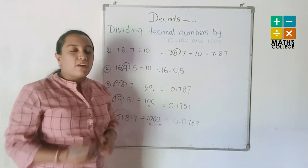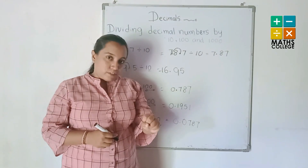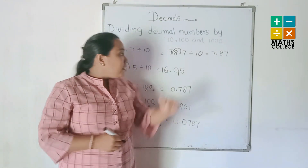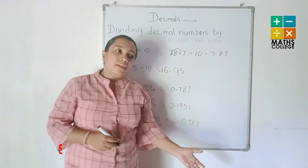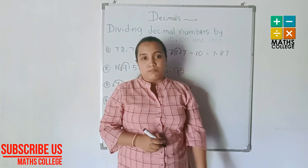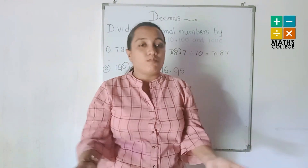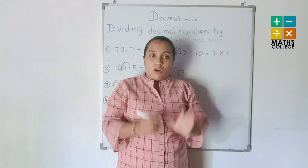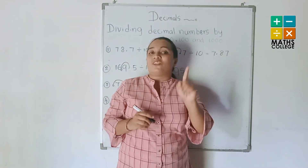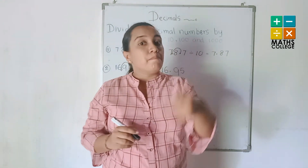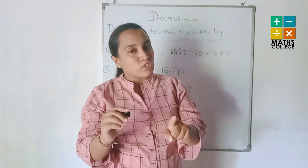Now observe these five examples. These things are very easy for you — observe carefully, step by step. We covered multiplication and division of decimal numbers: how to divide by a whole number, and by ten, one hundred, and one thousand. Goodbye, and don't forget to subscribe to our channel, Maths College. Thank you for joining me, and have a good future, my dear students.